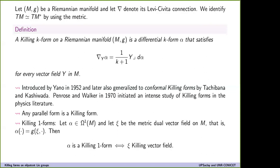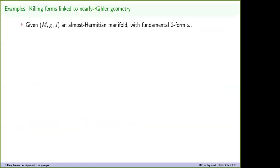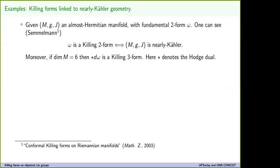In greater degree we have no notion of killing vector field, so killing forms are the extension. These killing forms in greater degree can be linked to special geometries. In the context of nearly Kähler manifolds, they have been considered by Semmelmann, for instance. For an almost Hermitian manifold with fundamental two-form omega, the condition for omega to be a killing two-form is equivalent to the almost Hermitian manifold being a nearly Kähler manifold. In dimension six, the Hodge dual of the differential of omega is a killing three-form.